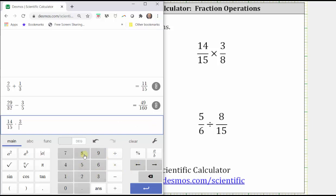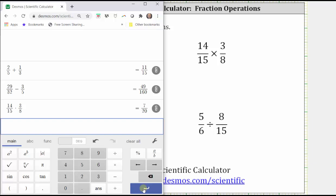times three divided by eight. Click convert to fraction, click enter. The product equals 7/20.